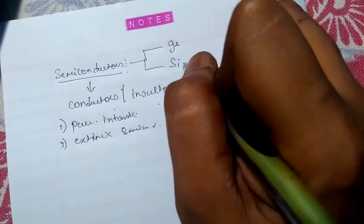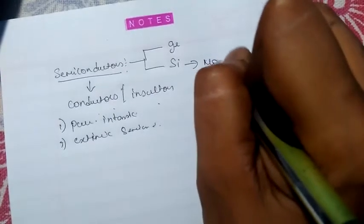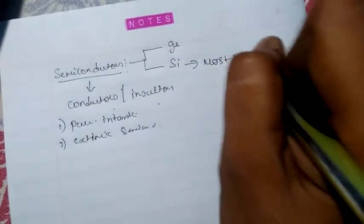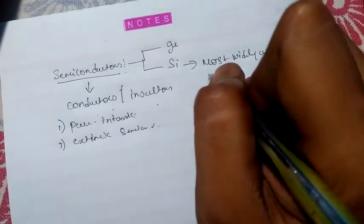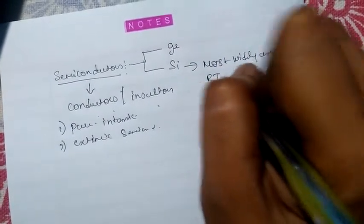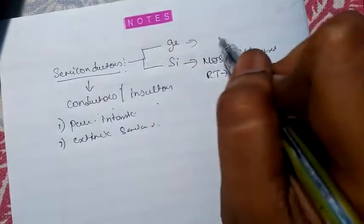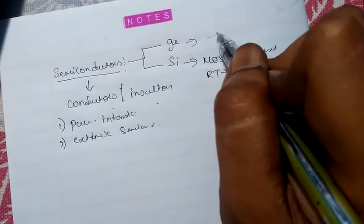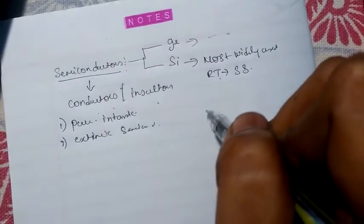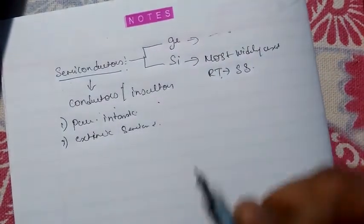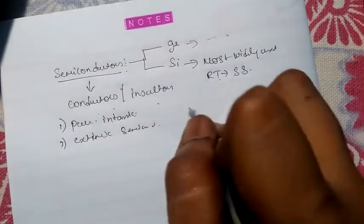The most widely used semiconductor material is silicon, because under room temperature it will be in a steady state condition. Whereas in case of germanium, some high amount of noise is produced and a lot of free electrons are created. So most prefer silicon because it remains stable and there will be no reverse current in it.